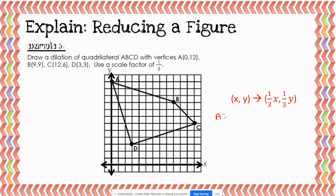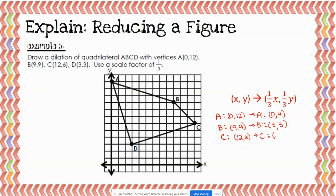A is at (0,12), so A prime is at (1/3 × 0, 1/3 × 12) = (0, 4). B is at (9,9), so B prime is at (1/3 × 9, 1/3 × 9) = (3, 3). C is at (12,6), so C prime is at (1/3 × 12, 1/3 × 6) = (4, 2). D is at (3,3), so D prime is at (1/3 × 3, 1/3 × 3) = (1, 1).